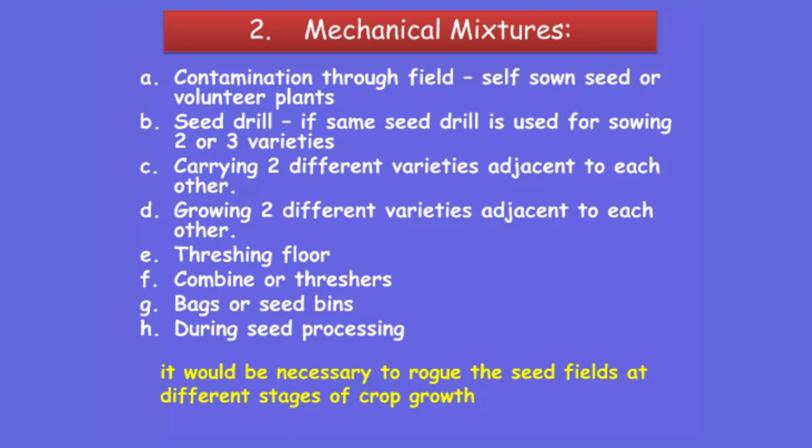To address mechanical mixtures, it is necessary to carry out rogging operations — removing off-type plants at different stages of the crop growth period. Rogging is one of the important operations in seed production. For each category of variety or crop, there are different numbers of rogging operations required — sometimes two, sometimes three. You must go to the seed field and carry out rogging operations accordingly.